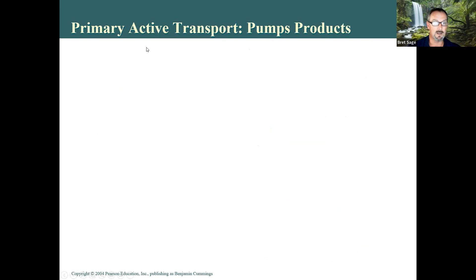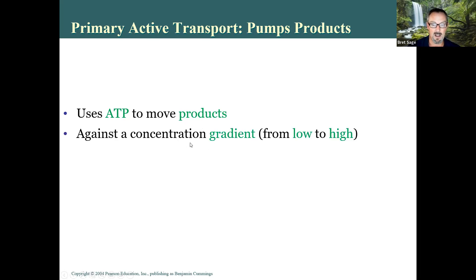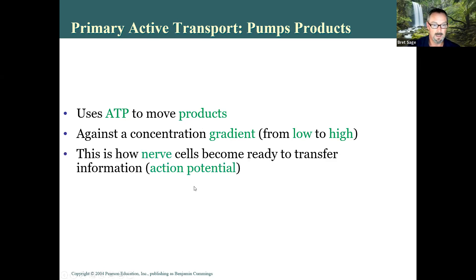Primary active transport requires energy — it uses ATP (adenosine triphosphate) to move molecules, often against the concentration gradient, from low to high concentration, which is the opposite of the way diffusion wants to go. This is how nerve cells become ready to transfer information through the action potential: they move sodium and potassium against their gradient using energy. That's part of why just thinking takes energy — pumping sodium and potassium costs ATP.